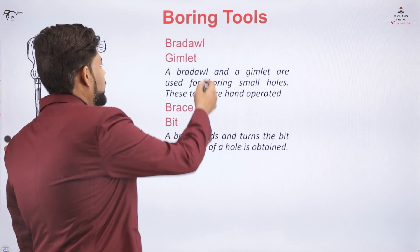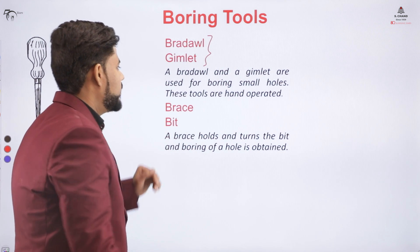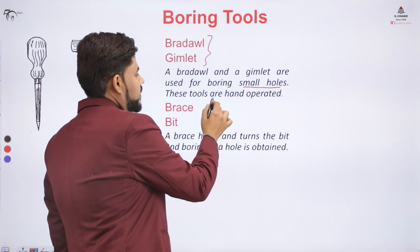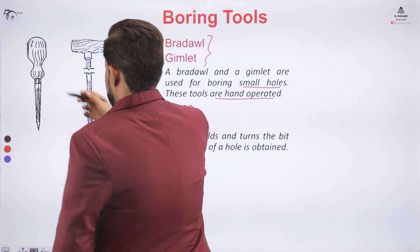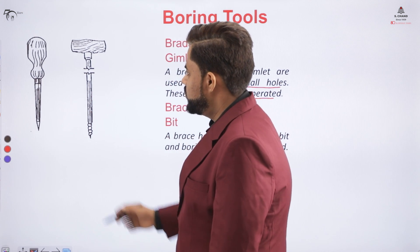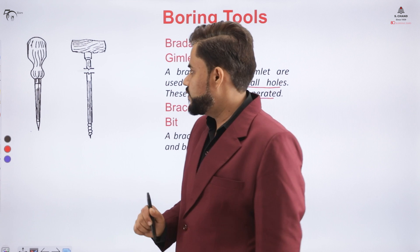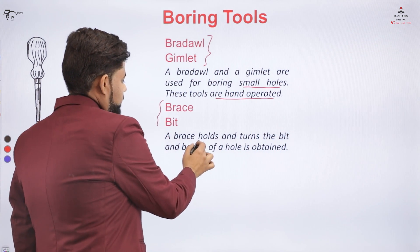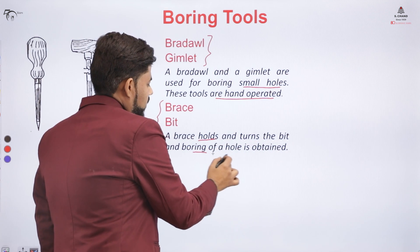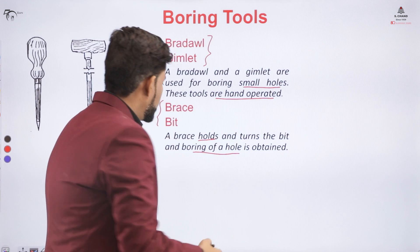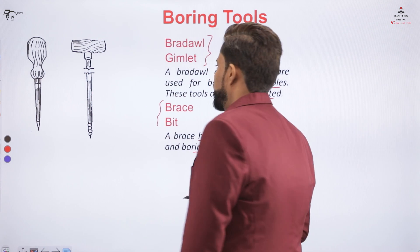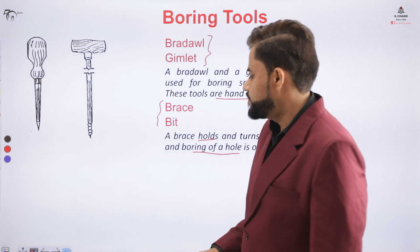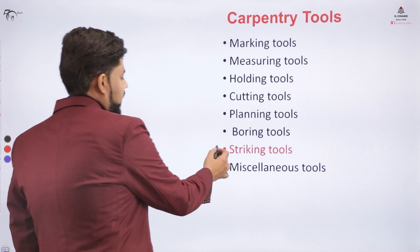The brandle and gimlet are tools used to make small holes on the surface and they are hand operated. You have a tool used to make a hole on the surface of the wood. Then you have a brace and a bit — the brace holds and turns the bit, and it bores a hole on the surface. With the help of these tools you can create a hole on the surface of the wood.